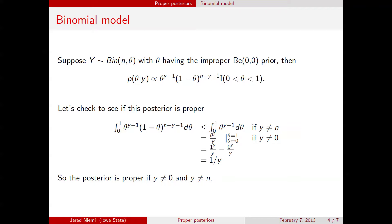So here's an example where we used an improper prior and the posterior is proper, so long as y is not zero and y is not n — that is, there weren't all successes or all failures. This demonstrates the fact that the posterior being proper may depend on the data you actually observe.